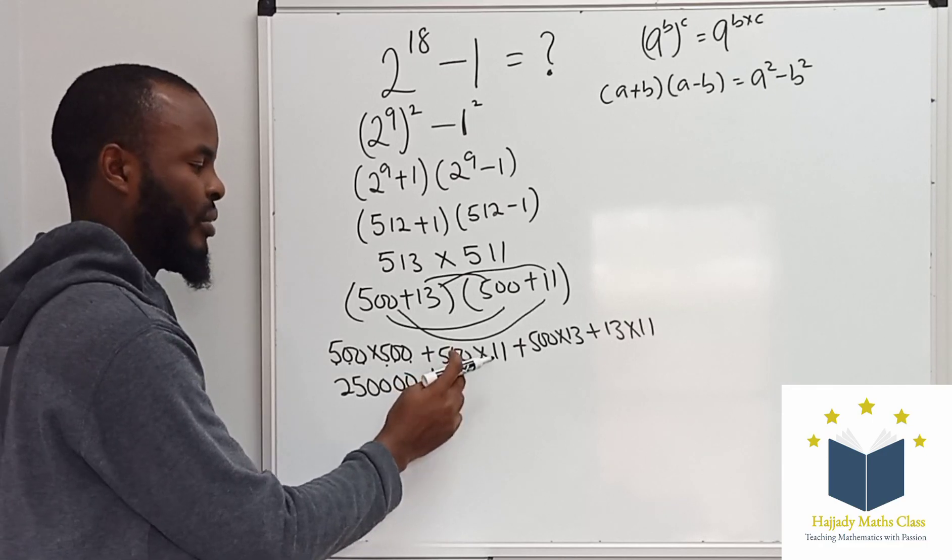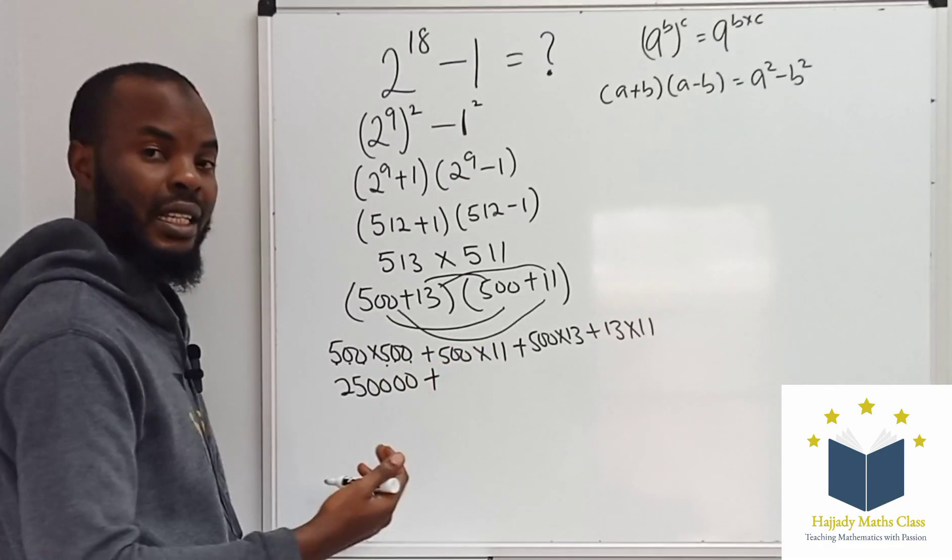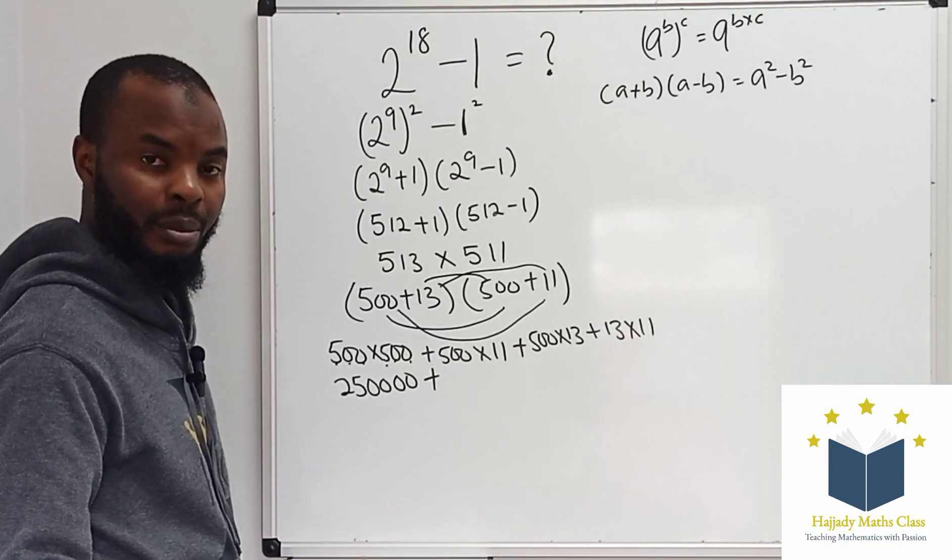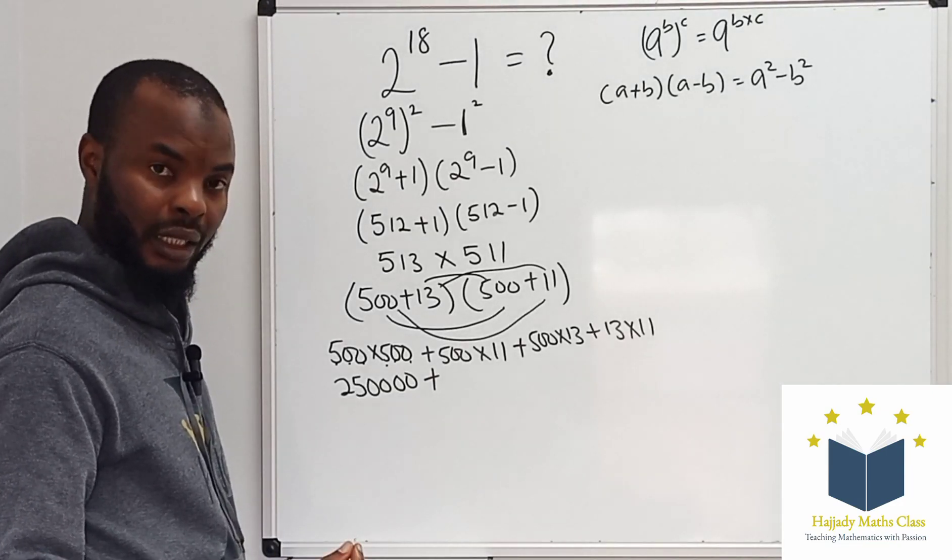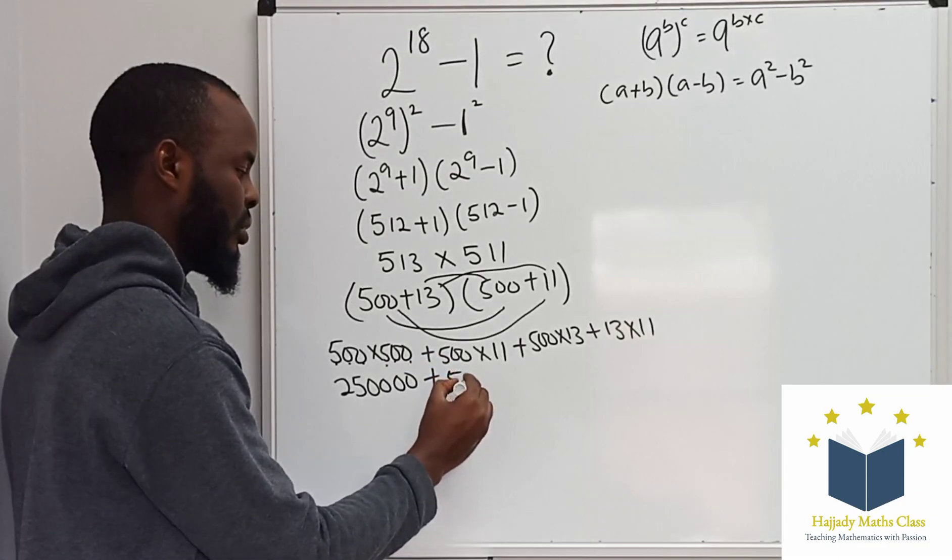Plus 500 multiplied by 11 is very easy because 500 is half of a thousand. So 1,000 multiplied by 11 is 11,000. Half of it is 5,500.